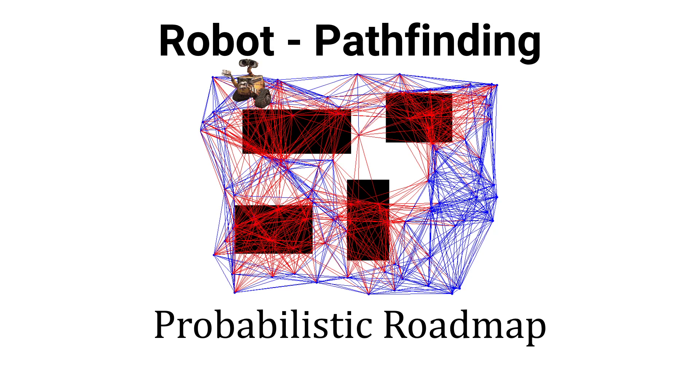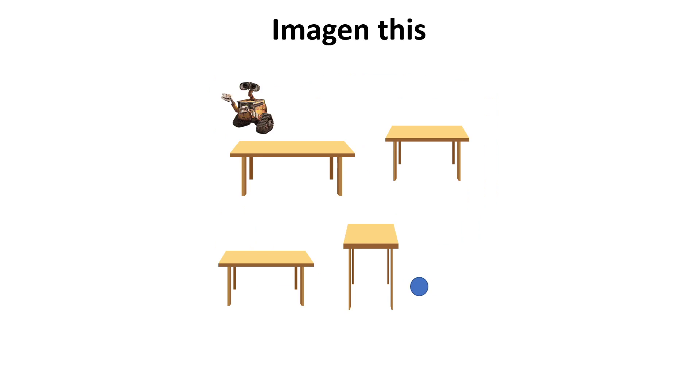So, probabilistic roadmap. The whole idea here is going to be used for robot pathfinding. If you imagine this scenario, we have a robot in a room, in this case Wall-E, and he wants to get to the blue circle. And there are some obstacles in the way, in this case tables.